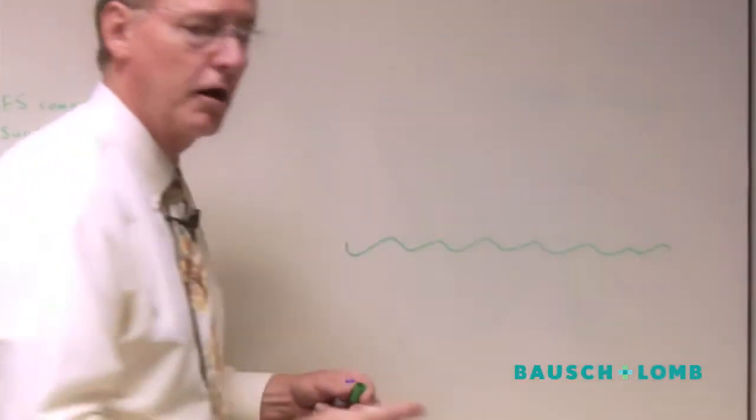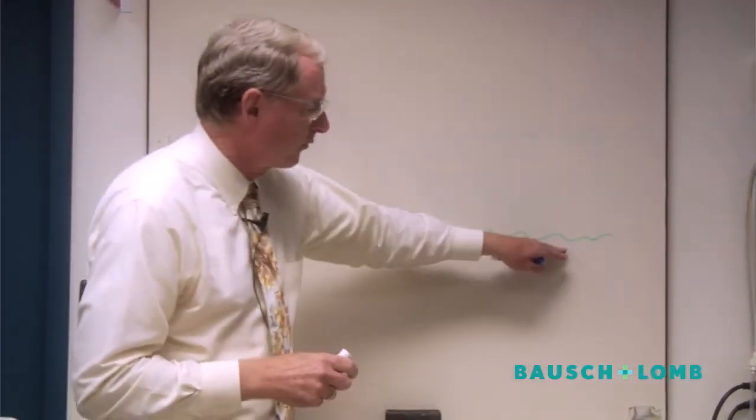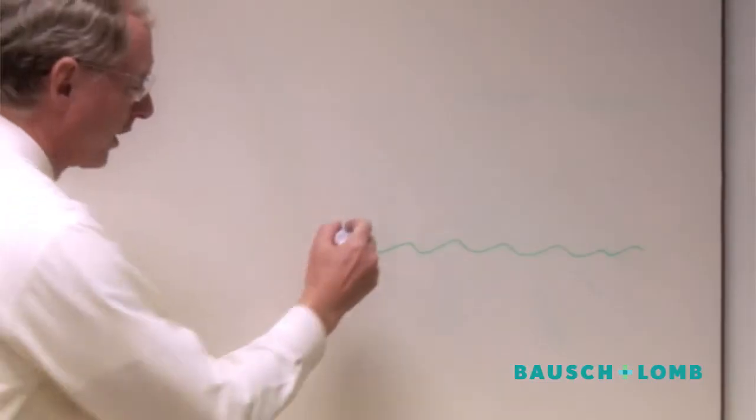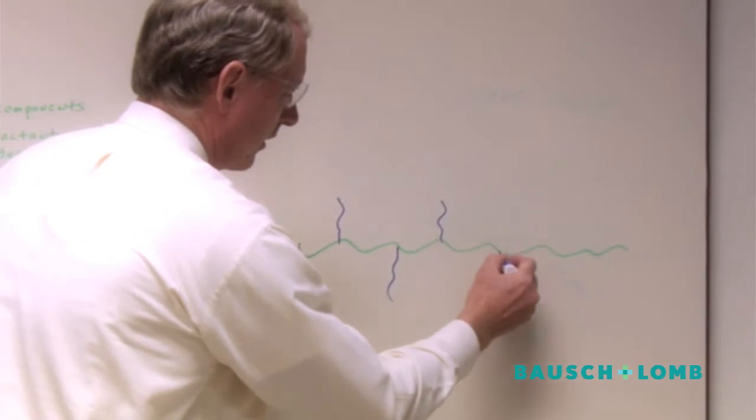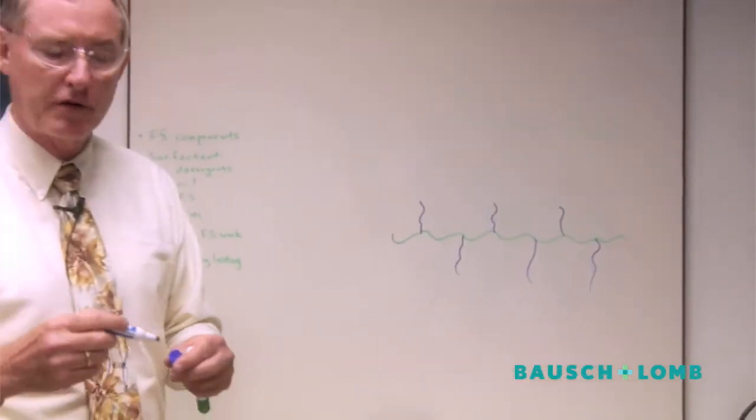Now a polymer is a long, long chain of many molecules tied together. This part of the polymer is hydrophobic and what we've done to this is we've incorporated or directly linked into this hydrophobic polymer, hydrophilic side chains.